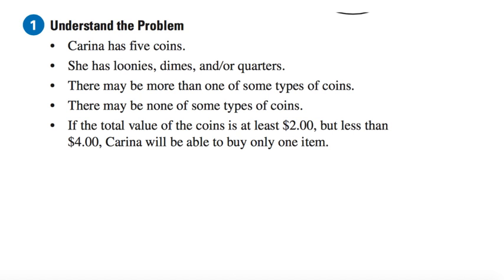So here's the problem: Carina has five coins. She has loonies, dimes, and/or quarters. There may be more than one of some type of coins. There may be none of some types of coins. If the total value of the coins is at least two dollars but less than four dollars, Carina will be able to buy only one item.